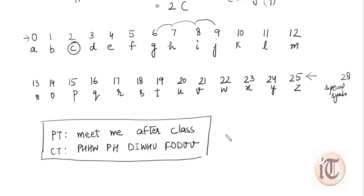This is how we use the Caesar cipher to convert plain text into ciphertext. If you have any doubts, you can ask in our comment section. Keep watching our videos — thank you so much.